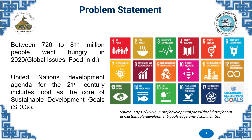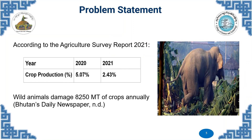In Bhutan, according to the Agriculture Survey Report of 2021, we have seen a decrease in crop production of 2.64 percent between 2020 and 2021, due to various factors — one key factor being wildlife damage. Wild animals damage 8,250 metric tons of crop annually, demonstrating a huge human-wildlife conflict affecting food security in our country.